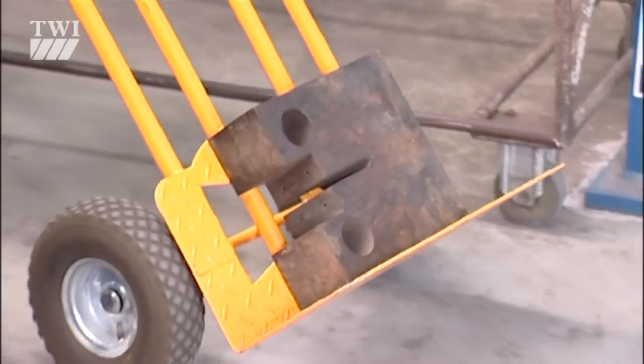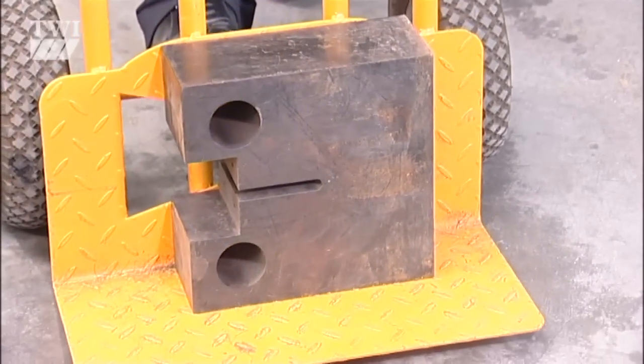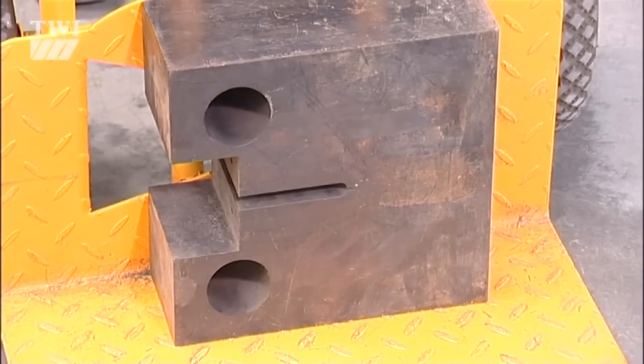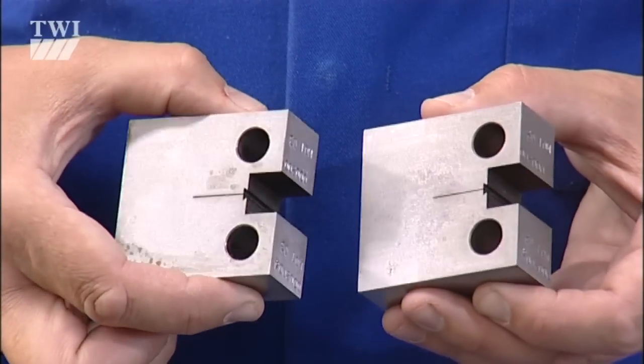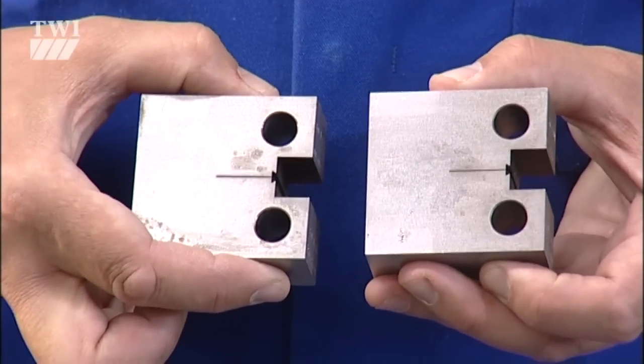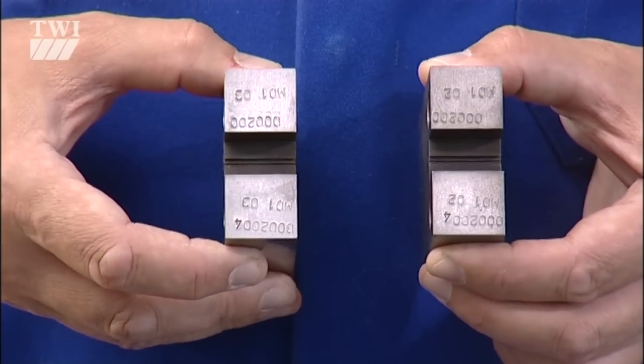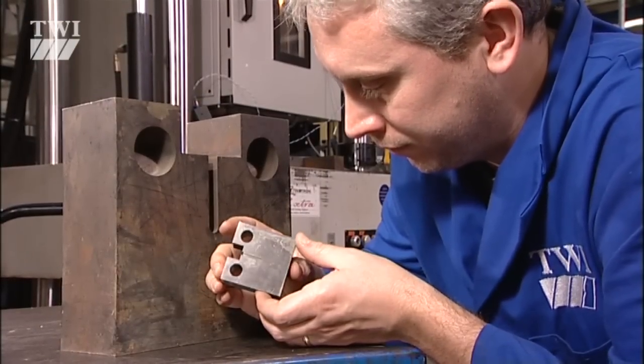The Compact Tension, or CT specimen, may also be used to characterise fracture behaviour. It's similar to the SENB specimen, in that it's a proportional specimen of full plate thickness, containing a deliberately introduced fatigue crack. CT specimens require much less material to manufacture, but are considerably more expensive to machine.